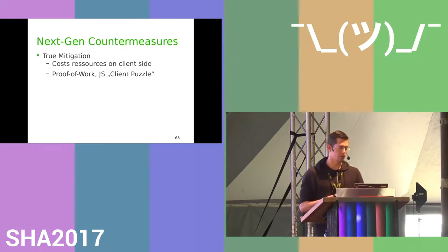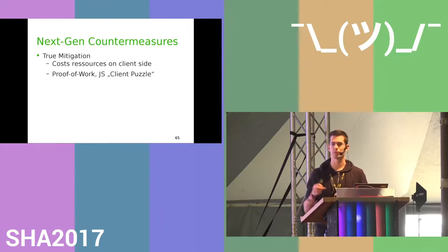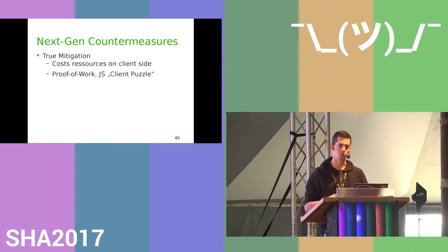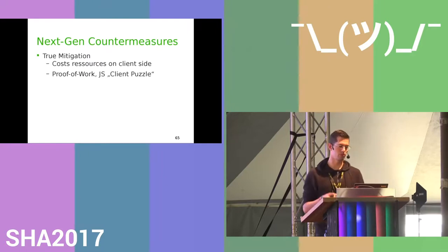True mitigation would require proof-of-work: a client puzzle in JavaScript where you make the client calculate a cryptographic hash that meets certain criteria. Only then can it access your website. This makes it costly in resources on the client side.